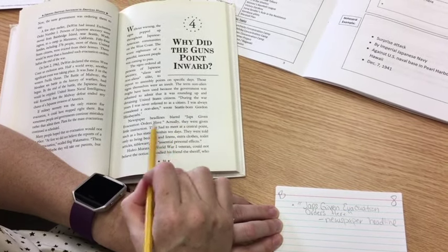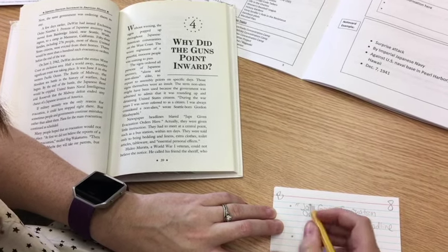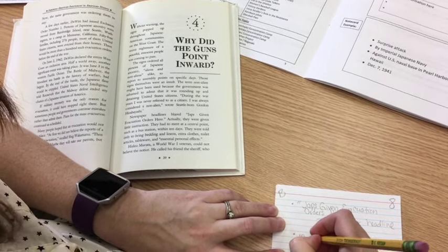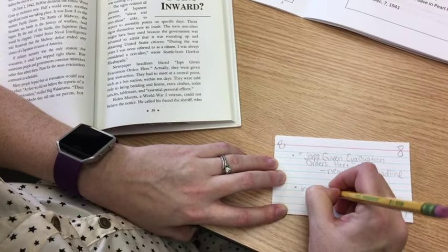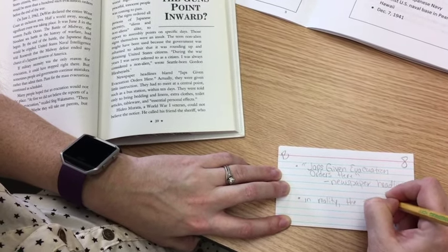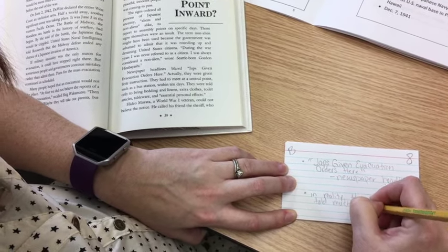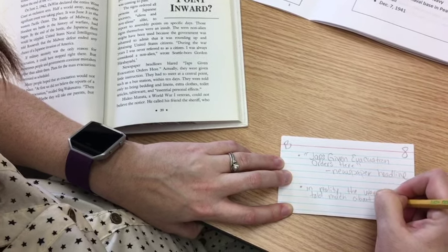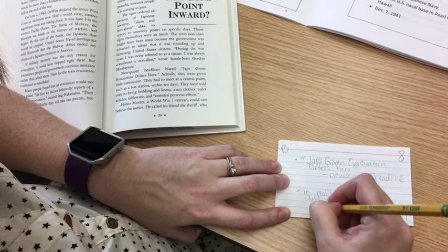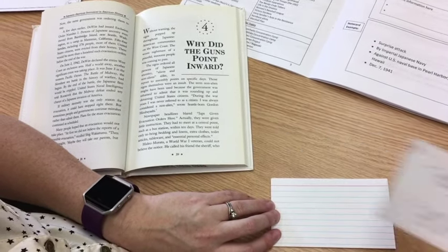The next line says, actually, they were given little instruction. So that goes, same idea goes with it. Instead of actually, I'm going to say in reality, they weren't told much about what to do. So I'm just putting that in my own words so that I'm paraphrasing as I go. Okay, there we go. One solid note card from the book.